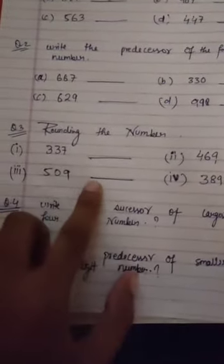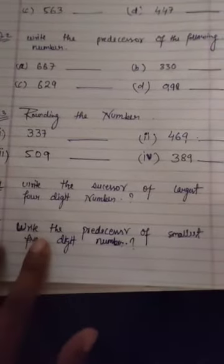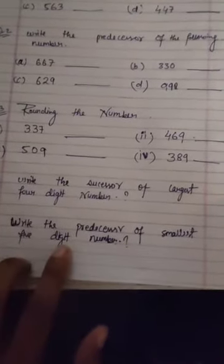Question number four: write the successor of largest four digit number. And in question number five, write the predecessor of the smallest five digit number.